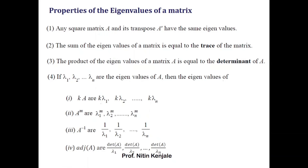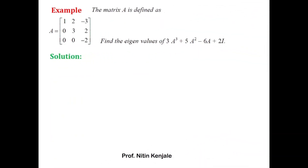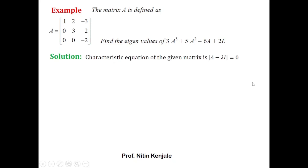Now we will see several examples. In this example we are given a matrix A and asked to find the eigenvalues of 3A³ + 5A² − 6A + 2I. You do not need to find what this matrix is — since matrix A is given, from its eigenvalues you can find eigenvalues of A³ and A². Note that eigenvalues of the identity matrix are always 1.